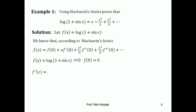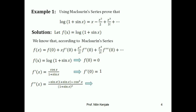Now we will find out f'(x) from f(x), which is 1 upon (1 + sin x) into the derivative of (1 + sin x), which is cos x. Therefore f'(x) is cos x upon (1 + sin x). Substituting x equal to 0, cos 0 is 1, therefore f'(0) is 1. Now we find f''(x), which is [minus sin x into (1 + sin x) minus cos²x] upon (1 + sin x)², which implies f''(0) is minus 1.